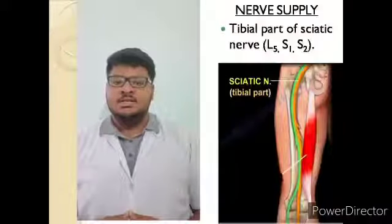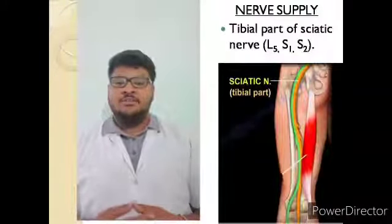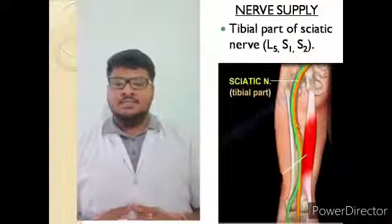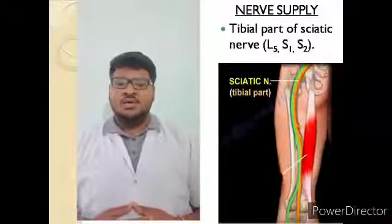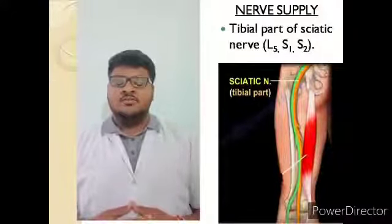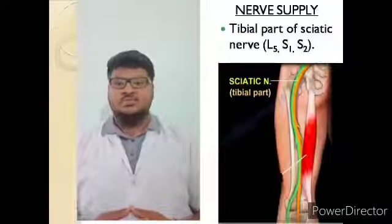The nerve supply of semimembranosus muscle is given by the tibial part of the sciatic nerve, and the nerve roots are L5, S1, and S2.